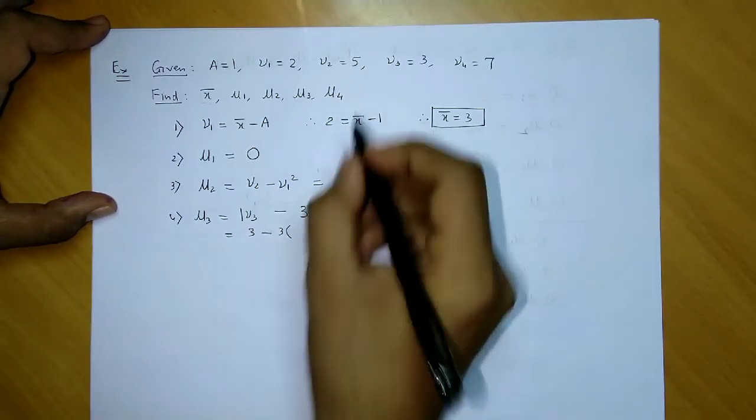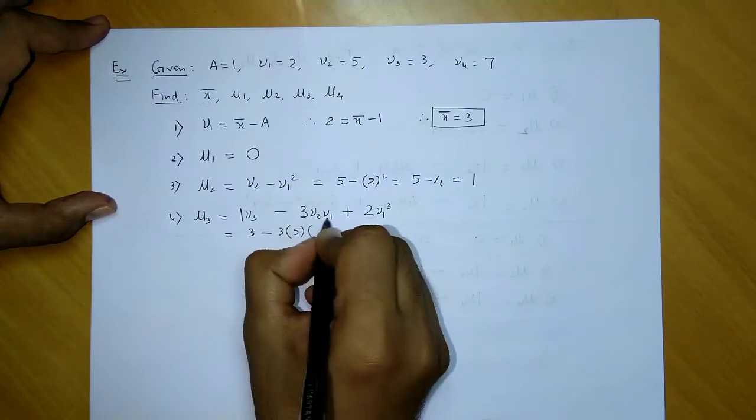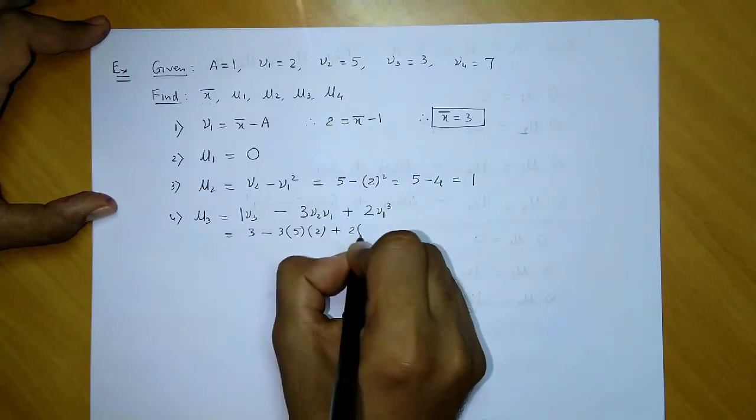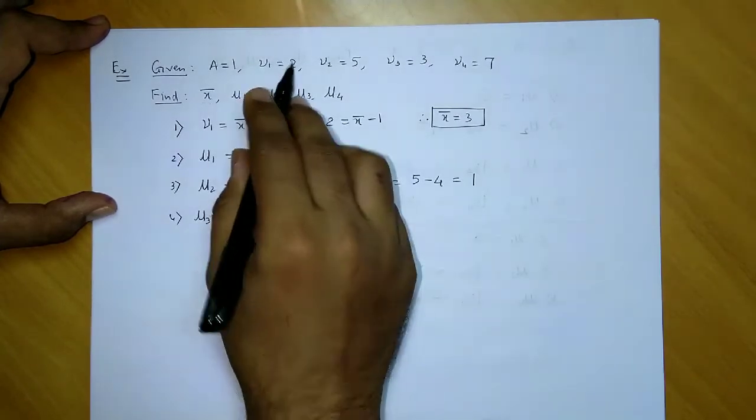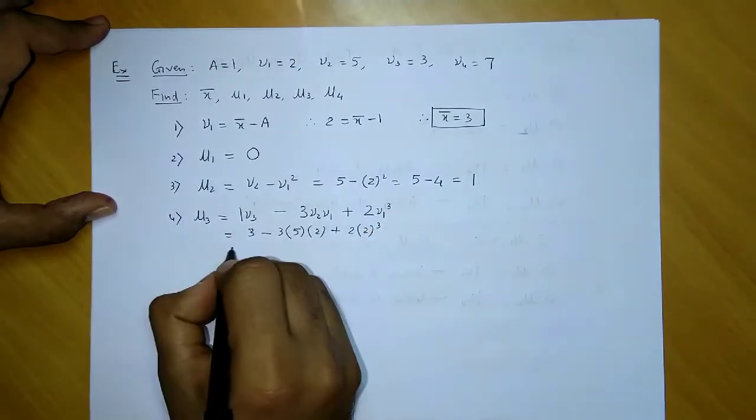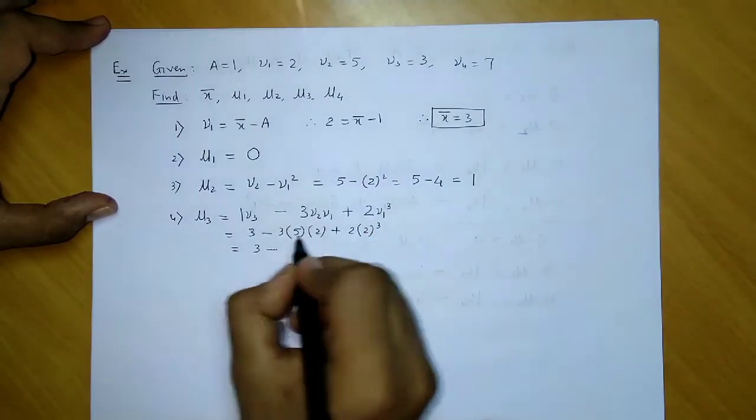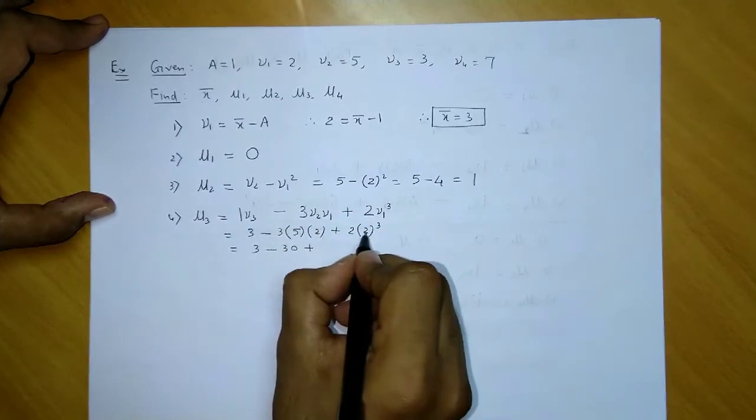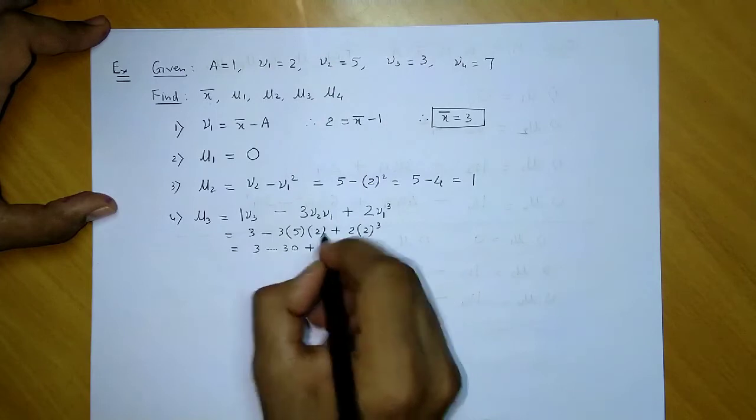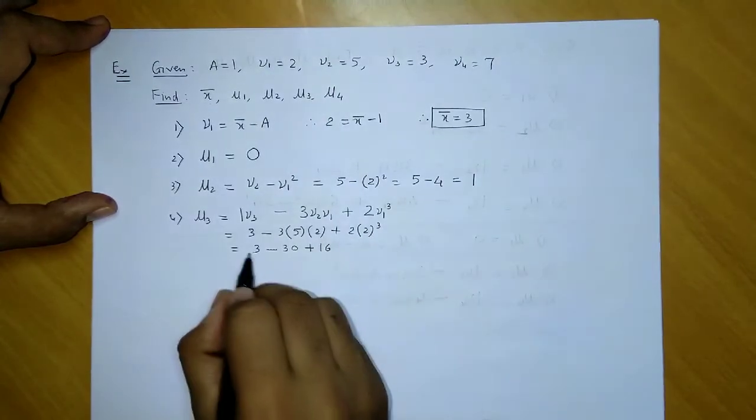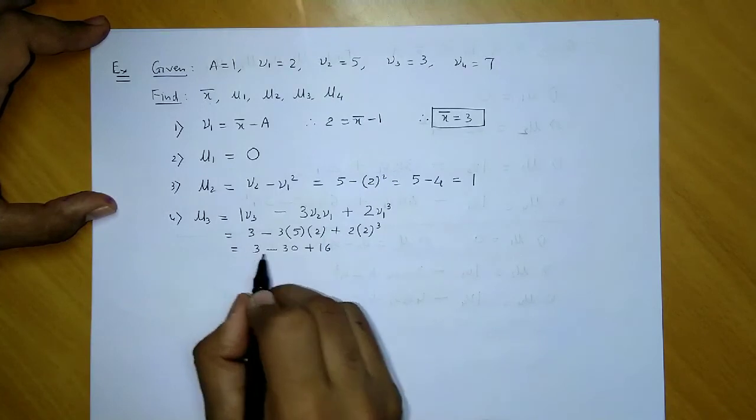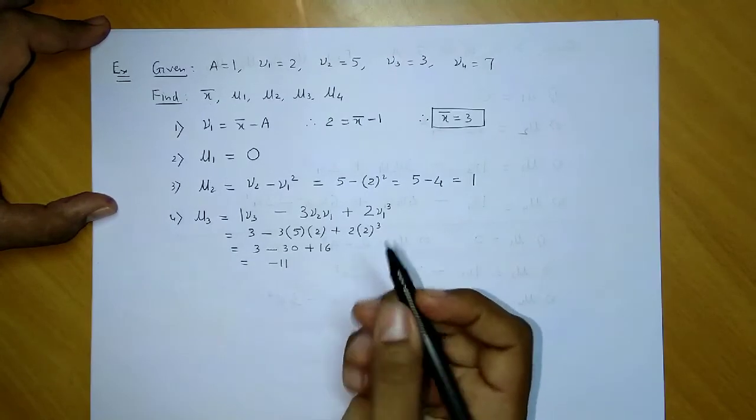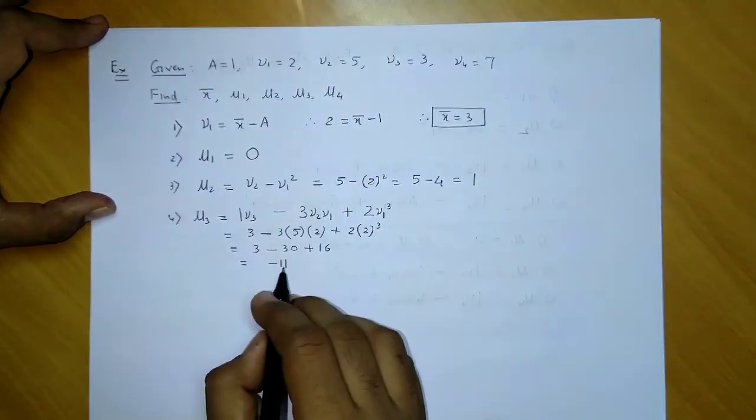Now let us substitute. v3 is equal to 3, minus 3 times v2 (which is 5) times v1 (which is 2), plus 2 times v1³ (that is 2³). Simplifying: 3 - 3(10) + 2(8) = 3 - 30 + 16 = -11. So μ3 value is -11.